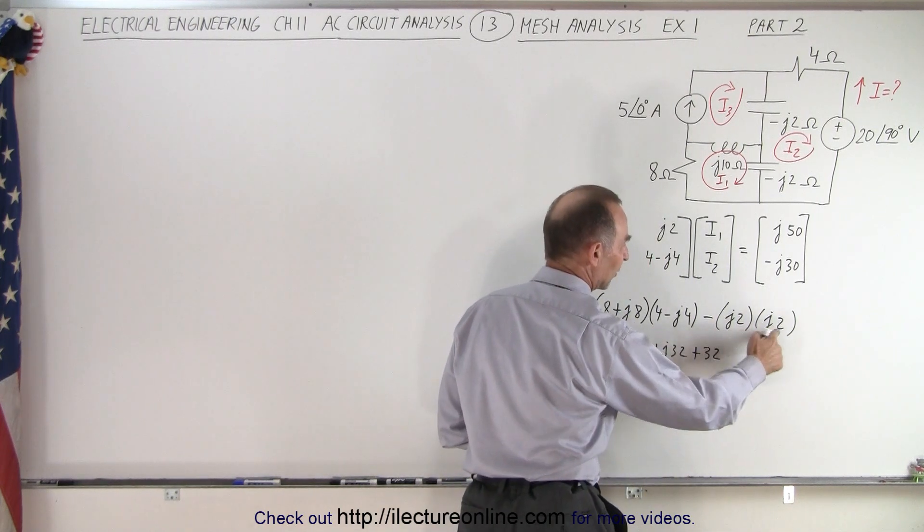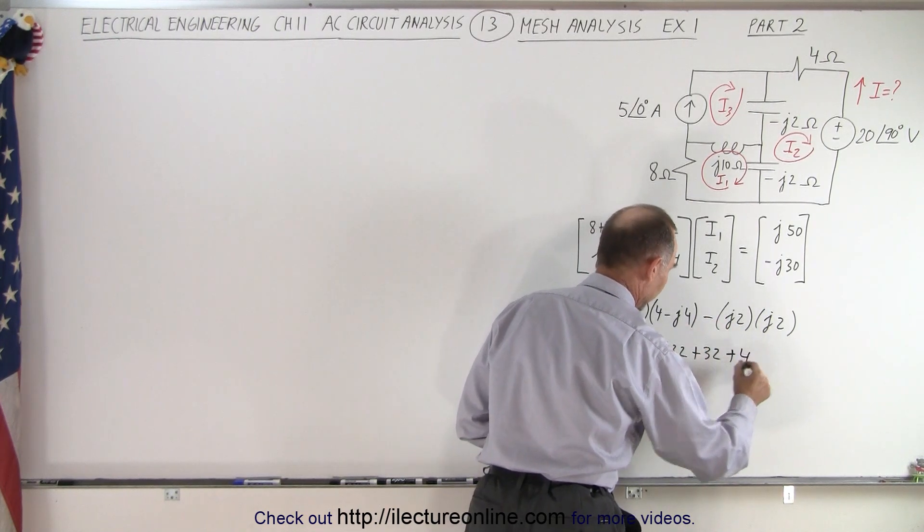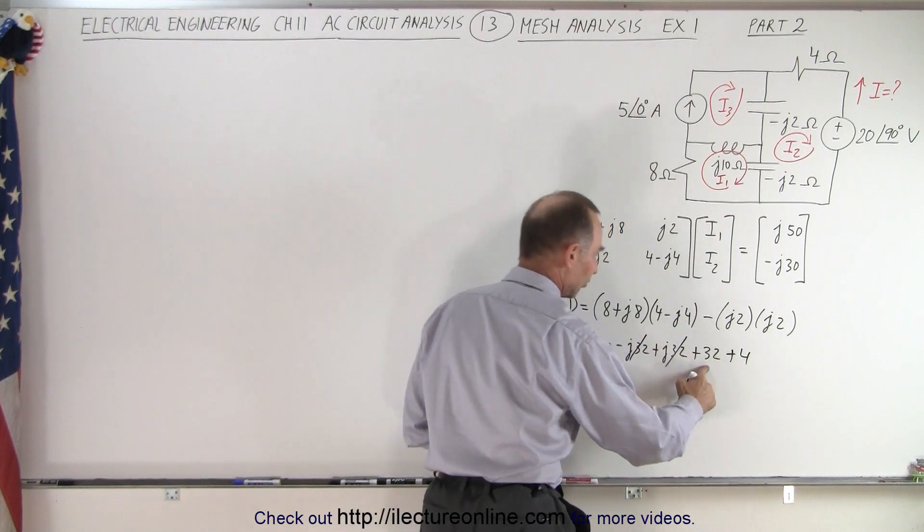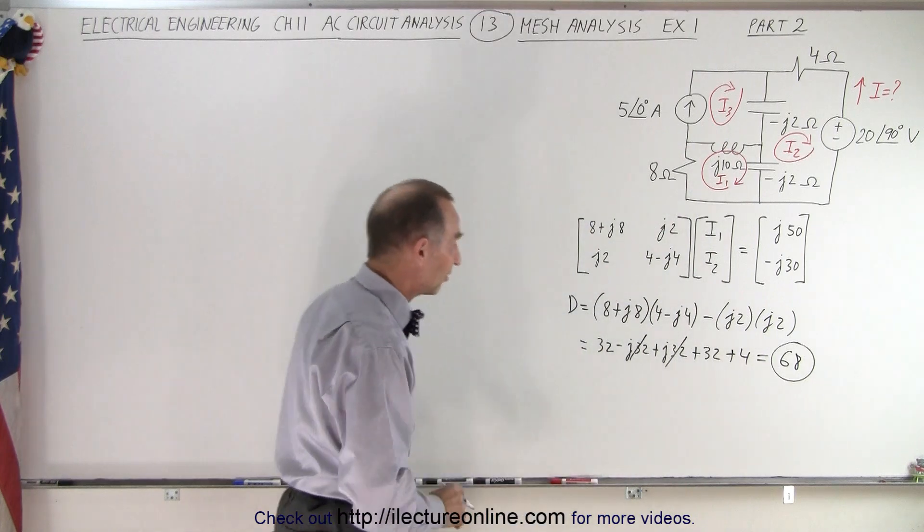And then here we have j2 times j2 which is j squared 4, which is minus 4 times the minus which is plus 4. Notice that these two cancel out. 32 plus 32 is 64 plus 4 which is equal to 68. So our determinant is equal to 68.